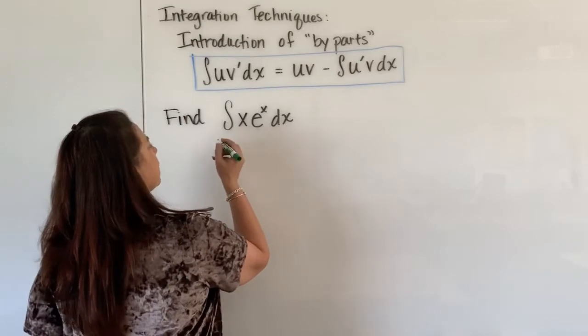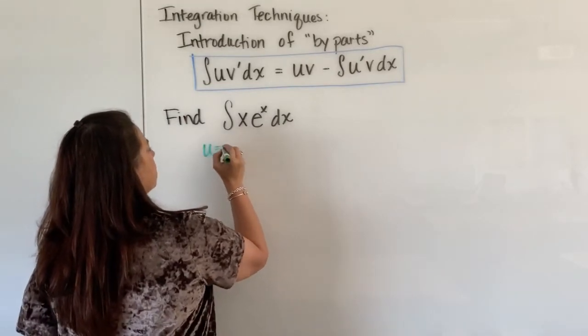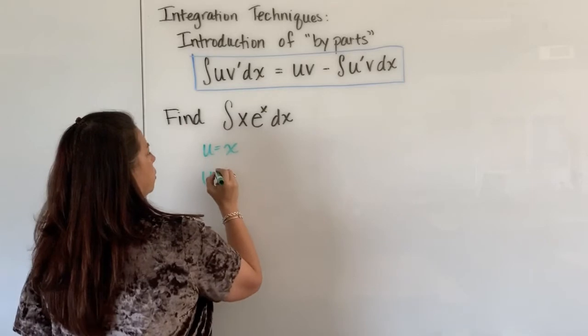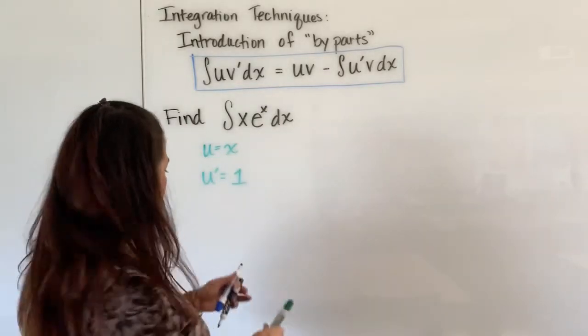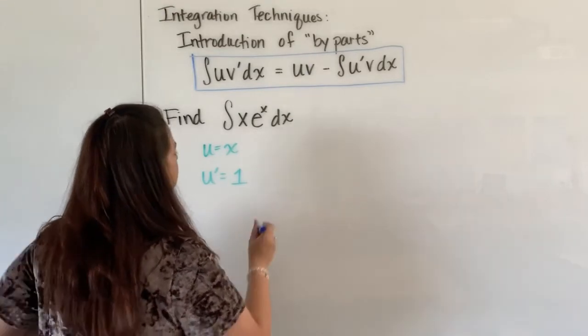So let's let x be our u and of course that means we need to find what u prime actually is which we love it because it's just one.